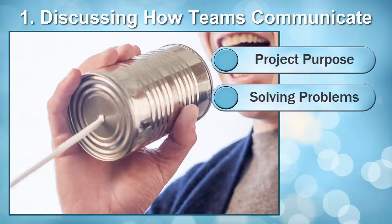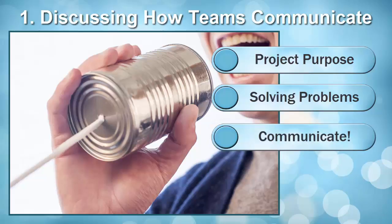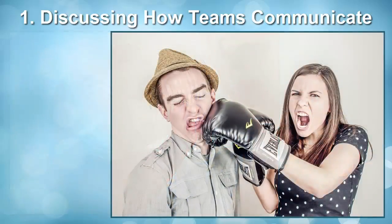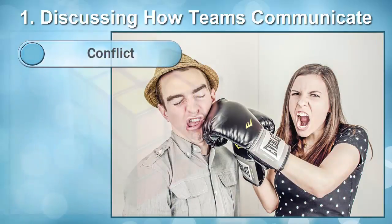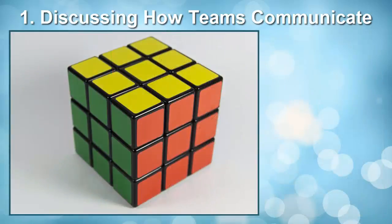Second, it is important to work with your groupmates in order to solve your project's problems. In order to do that, your team needs to communicate. Without regular effective communication that is clear, team roles and responsibilities may blur, causing conflict that prevents team goals from being achieved. So, how would you communicate to achieve your project goals?